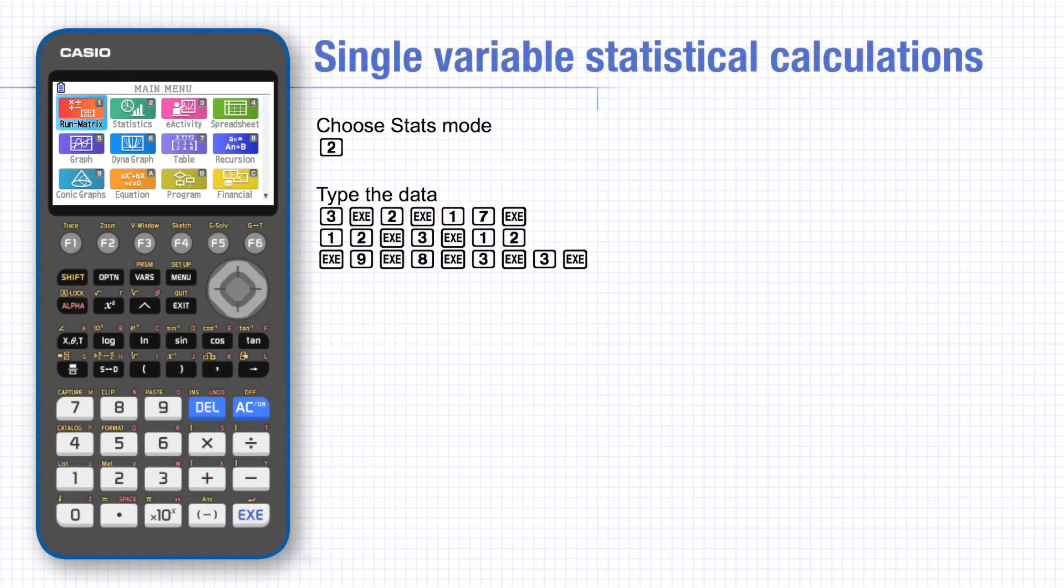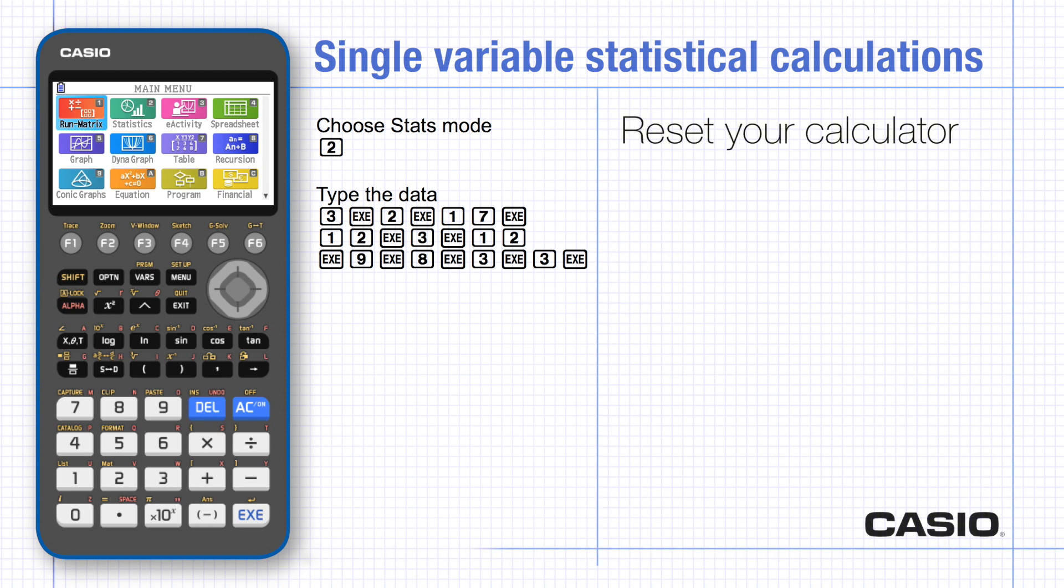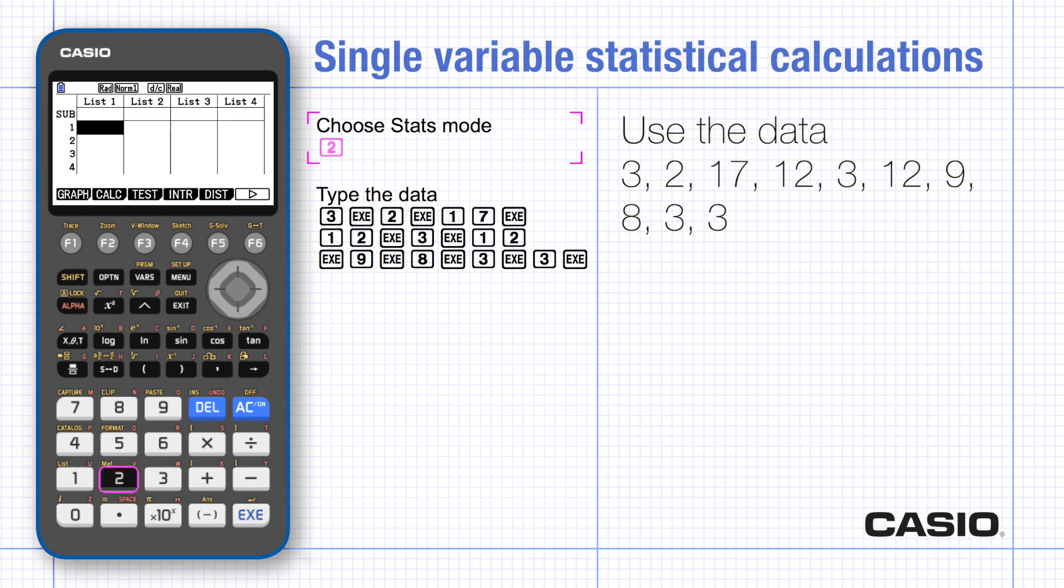In this tutorial we're looking at statistical calculations for a list of numbers and for numbers with a frequency. To work along with this tutorial, you may find it easiest to reset the calculator before starting so your screen matches the one in the video. Choose stats mode and type your data into one of the lists.